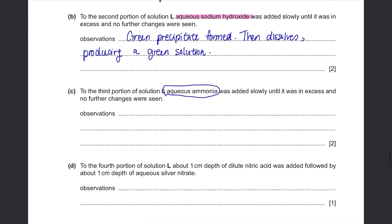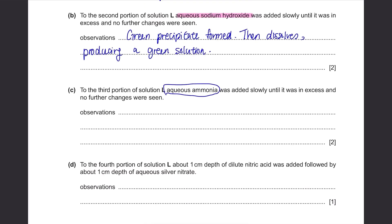Part C: To the third portion of solution L, aqueous ammonia was added slowly until it was in excess and no further changes were seen. Again, with chromium(III) ions, if you add aqueous ammonia, we've learned that grey-green precipitate will be formed but this time, it will not be soluble in excess so there will be no change even if it's added in excess.